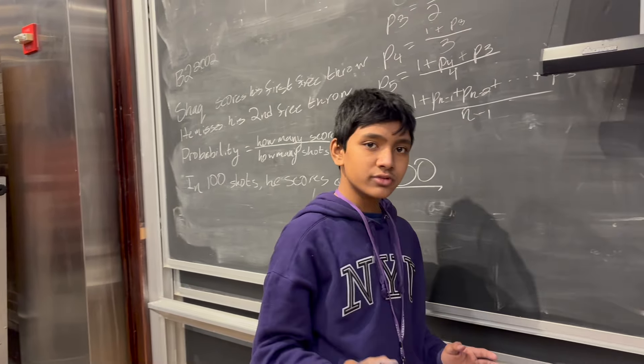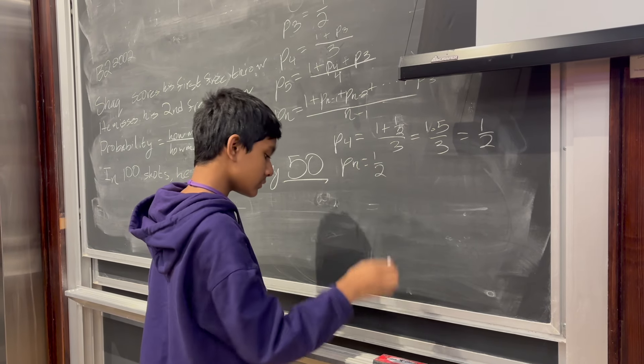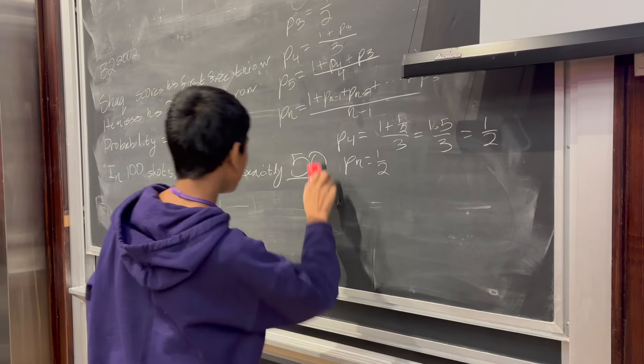So now, let's think about it. Let's try to prove this by induction. So firstly, let's see if we can just find the formula for all Pn. P4 is equal to 1 plus 1 over 2 divided by 3, which is 1.5 over 3, which is clearly 1 half. So P3 is a half, P4 is a half. Let's see if we can prove that Pn is a half.